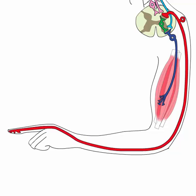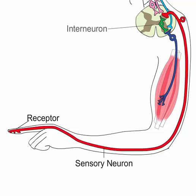A reflex occurs when nerve impulses travel over a simple neuron pathway called a reflex arc. Reflex arcs have five basic parts: receptors, sensory neurons, interneurons, motor neurons, and effectors.